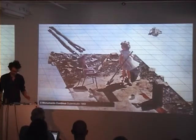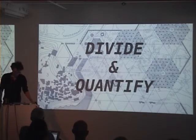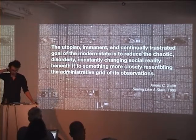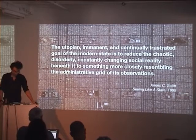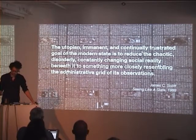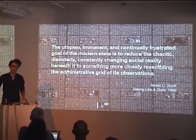This introduces the first section of this talk, called Divide and Quantify. James C. Scott's Seeing Like a State — everyone should read this book. The central premise: the utopian, continually frustrated goal of the modern state is to reduce the chaotic, disorderly, constantly changing social reality beneath it to something more closely resembling the administrative grid of its observations. He points out that the project of the state — and this applies to corporations and any large governing body — is a three-stage process: first, filter what you need from the world; second, abstract it; third, reform the world in the image of that abstraction. A friend calls this a very small idea with a very big shadow.